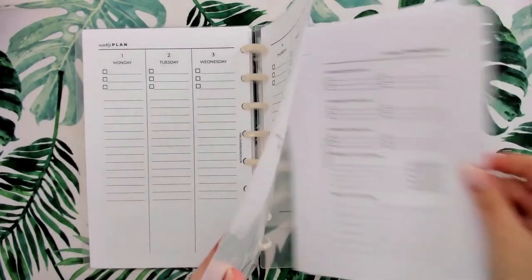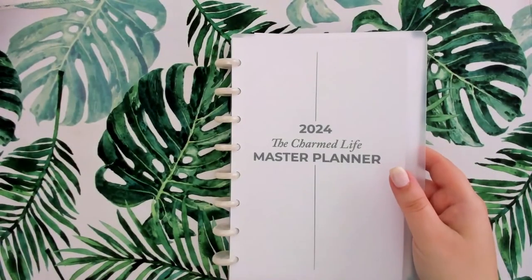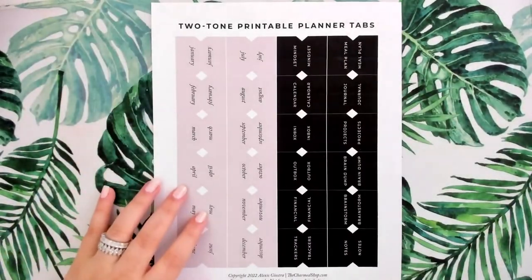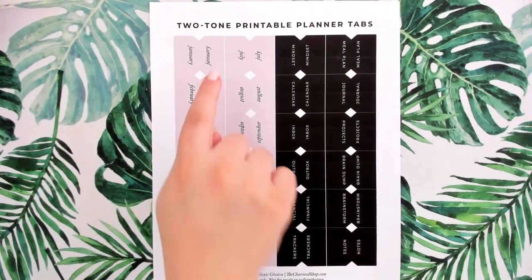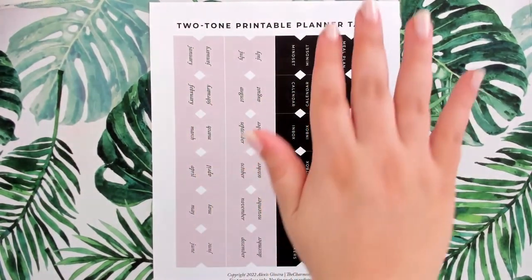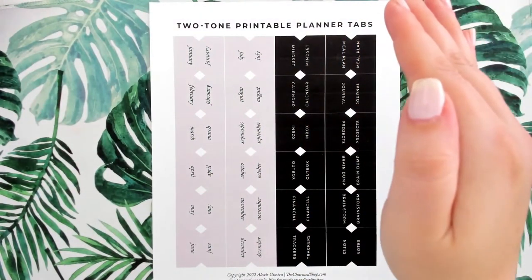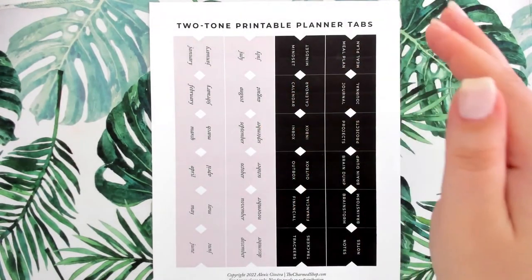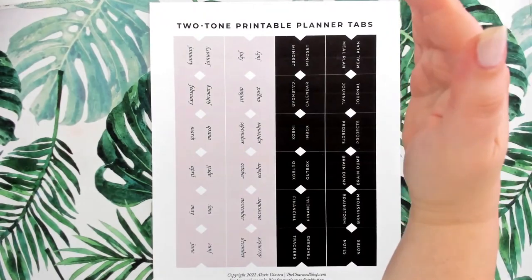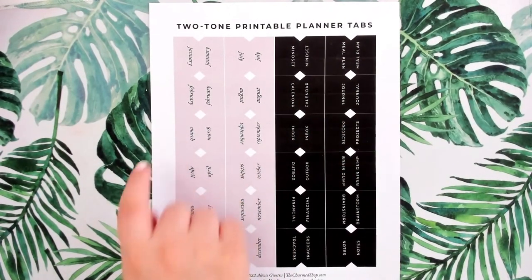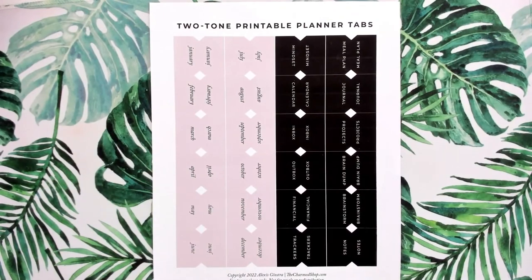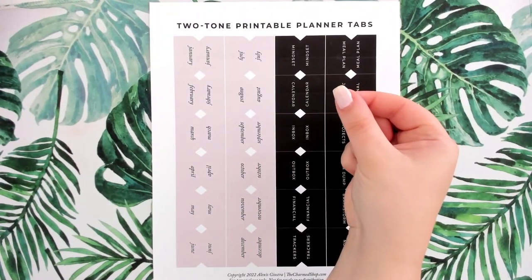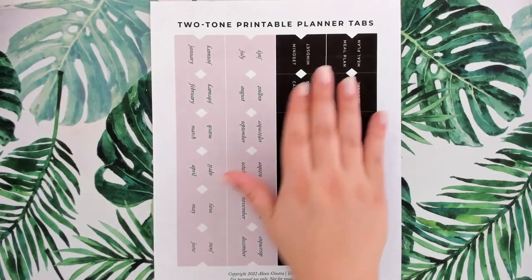So that is the print on demand master planner. Also real quick — this is the printable planner tabs file. You will print this on a full size sticker label sheet, then cut out each individual tab, fold them over onto the corner of a page, and you've got a tab. These are the two-tone printable planner tabs.